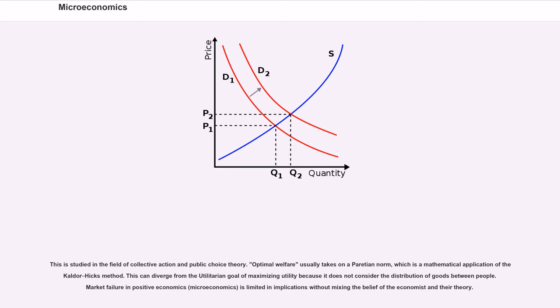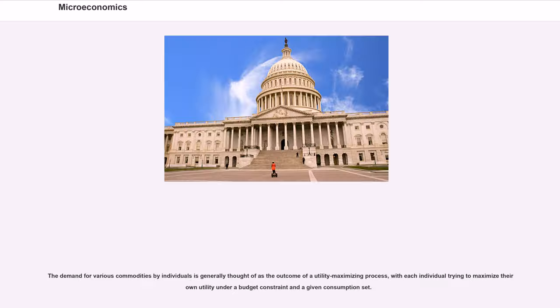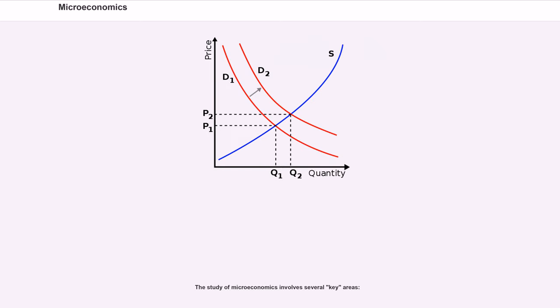Market failure in positive economics, microeconomics, is limited in implications without mixing the belief of the economist and their theory. The demand for various commodities by individuals is generally thought of as the outcome of a utility maximizing process, with each individual trying to maximize their own utility under a budget constraint in a given consumption set. The study of microeconomics involves several key areas.